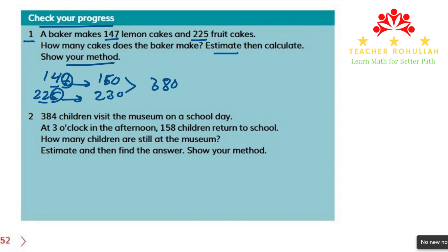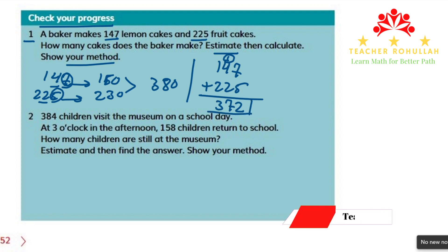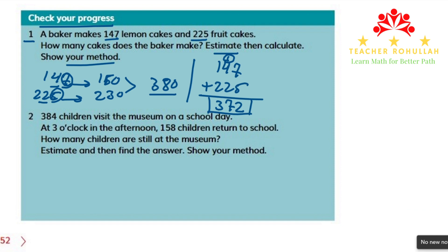Let's now find the exact number of cakes that the baker has baked. So 147 plus 225 — I will use column addition, and we should not forget the addition sign. 7 plus 5 is 12; we regroup 1 and write it above the tens place. 4 plus 2 is 6, and 6 plus 1 is 7, and 1 plus 2 is 3. So the answer is 372, which is very close to the estimated answer. It means the baker has baked 372 cakes.